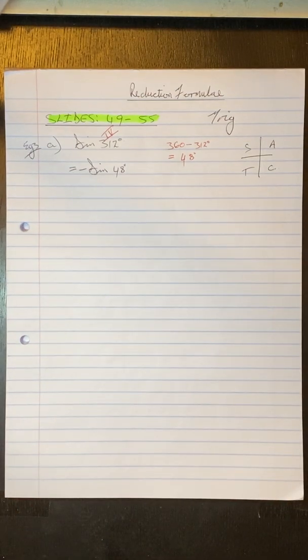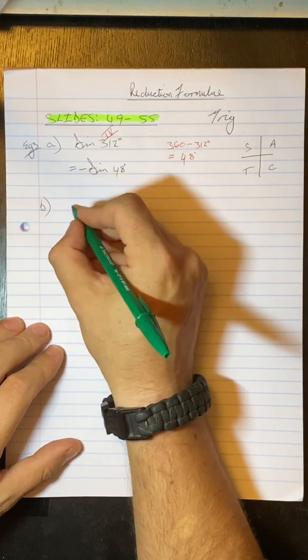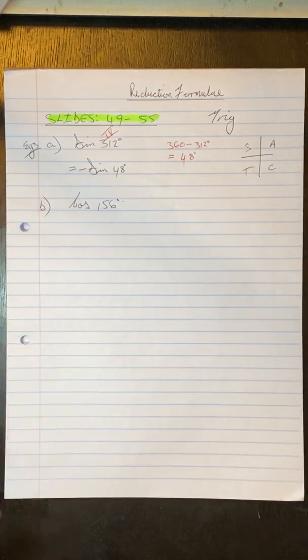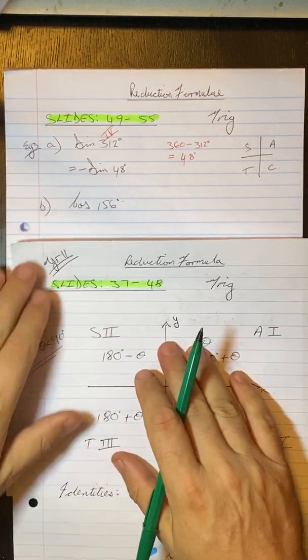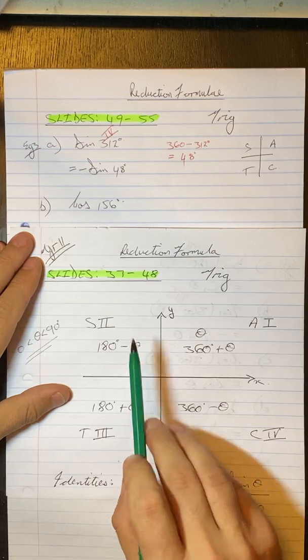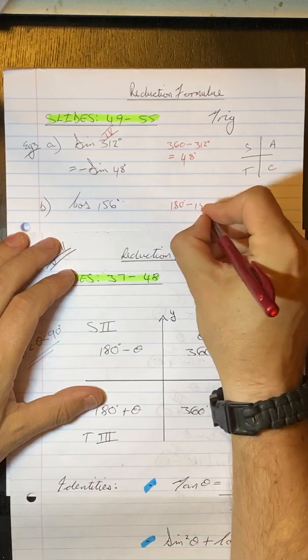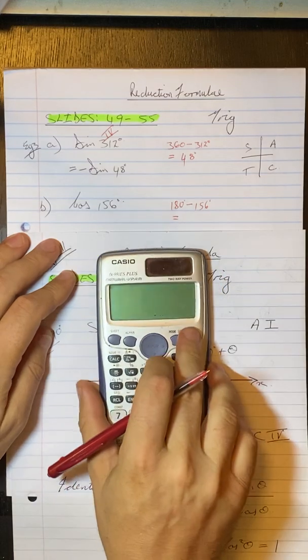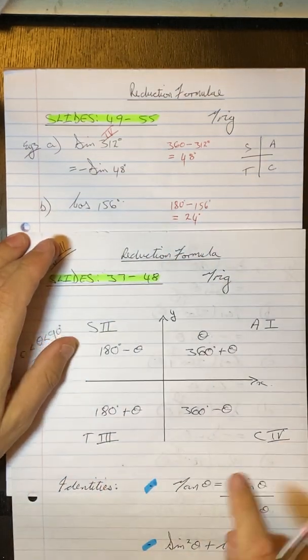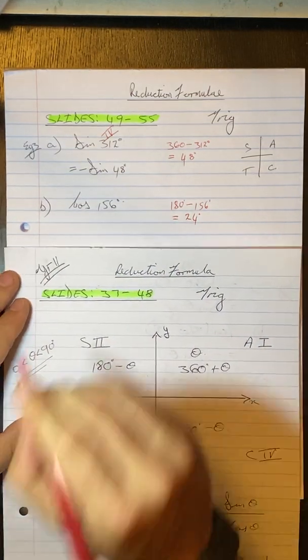Right moving on to example or question B. They're asking us to reduce this to an acute angle. So cos 156. So if we go back to yesterday's lesson. 156 degrees is in your second quadrant. So we said 180 minus something gave us that. So 180 degrees minus 156 degrees will give us 24.